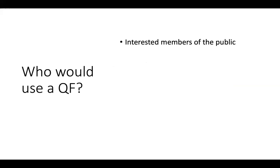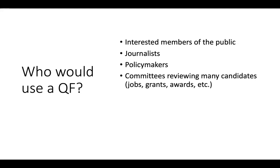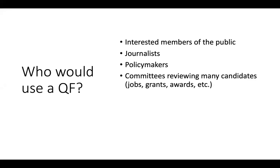Who would use these paper-level quantitative ratings on different dimensions? Interested members of the public — we all have family members who want to know whether to believe the latest science finding. Science journalists — this is basically what they try to recreate when they call other experts for comment. Policy makers, who don't have the expertise to evaluate paper quality themselves but care about specific dimensions like whether applied claims are warranted. Within science: committees reviewing many candidates, scientists in neighboring disciplines, and even scientists in the same discipline who could benefit from complementary expertise and aggregated judgments.